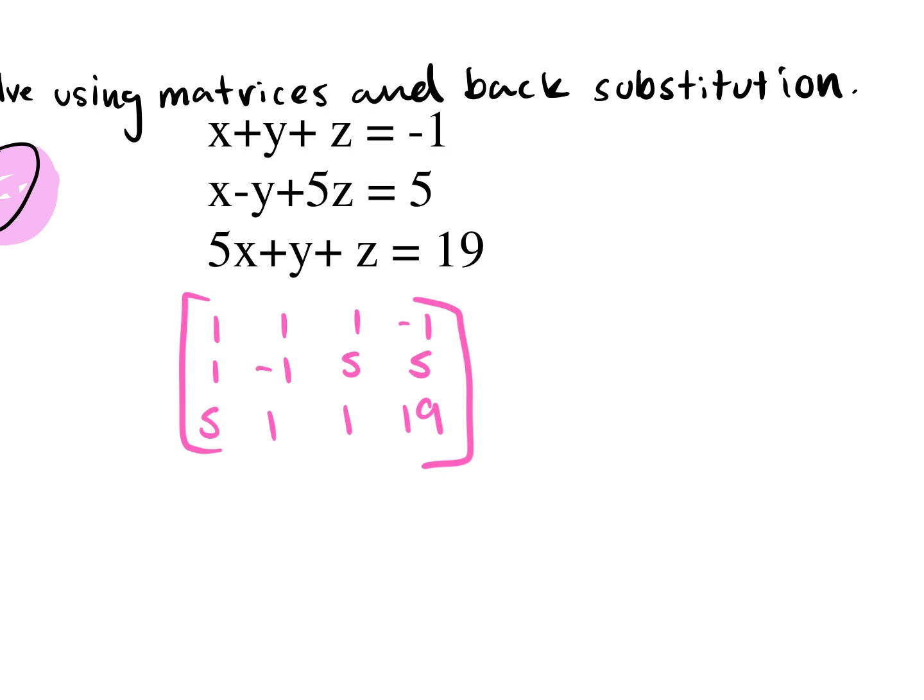Remember we can switch two rows around, we can multiply a row by a coefficient or constant, and we can add two rows together. Our goal is to get a diagonal of ones and zeros underneath. I already have a one in that first position, which works perfectly. Next I want to put a zero right below it.